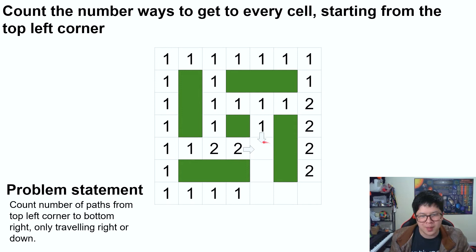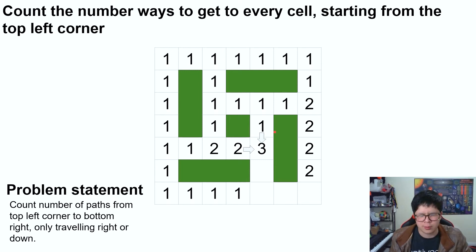And it should be screaming at you right now that this cell right here is two plus one equals three. Now, wait, wait a second. How do we get there? And how can we be sure that this method of counting, where we get the number of ways to get to a certain cell by counting the number of ways to get to the left cell and the upper cell? How can we be sure that this works?